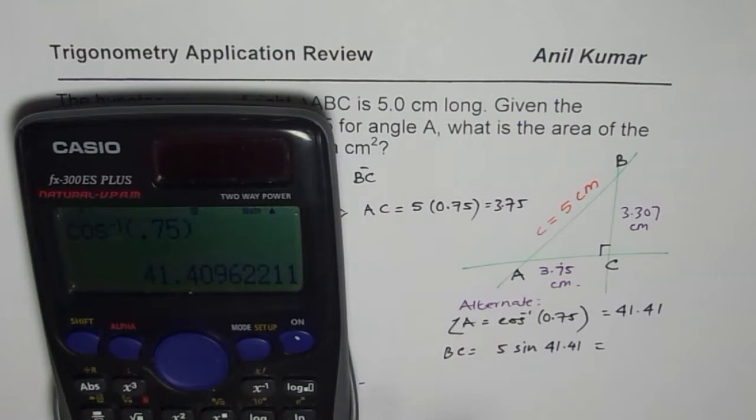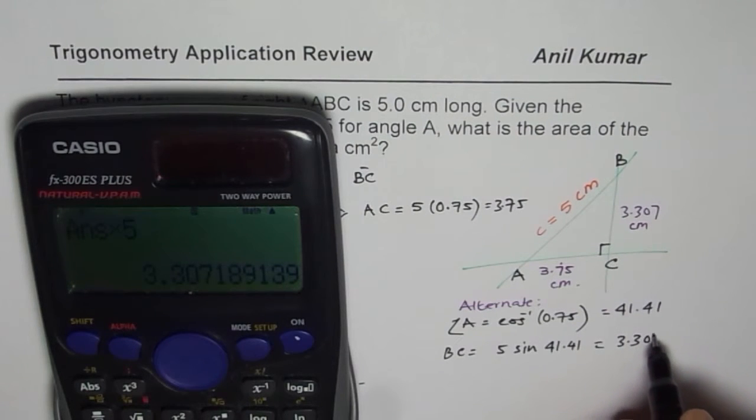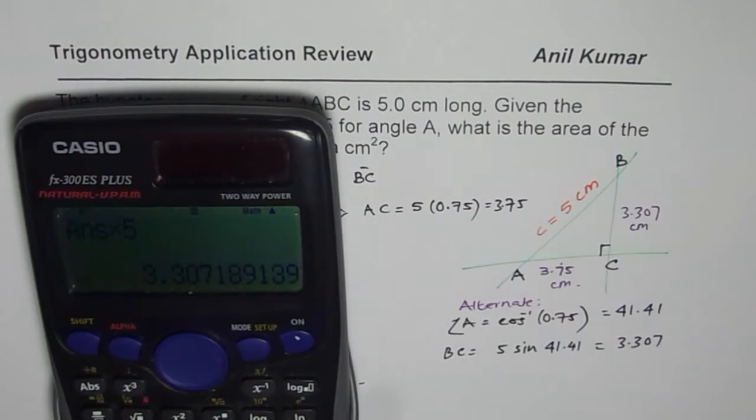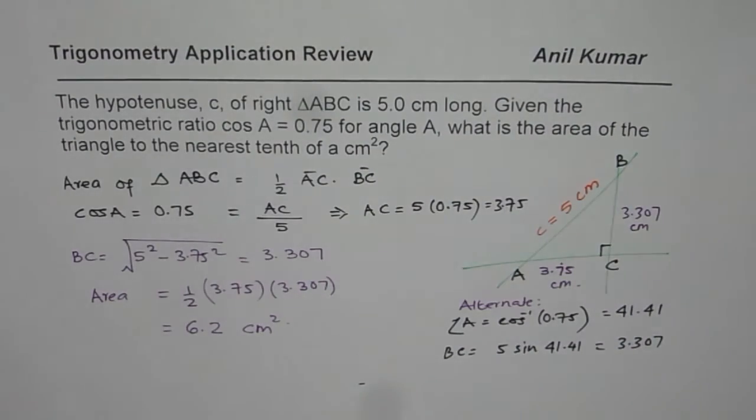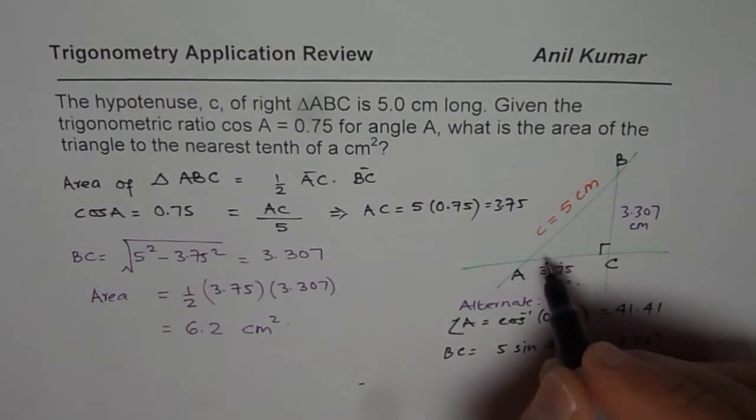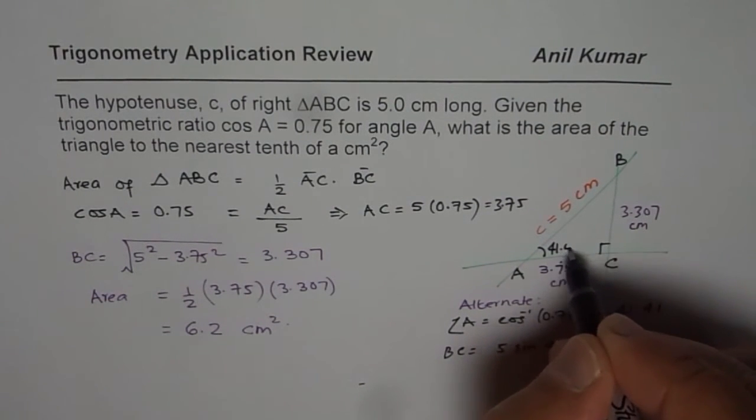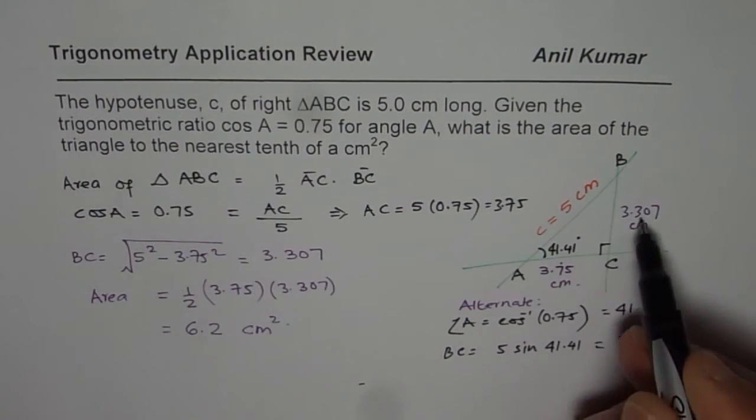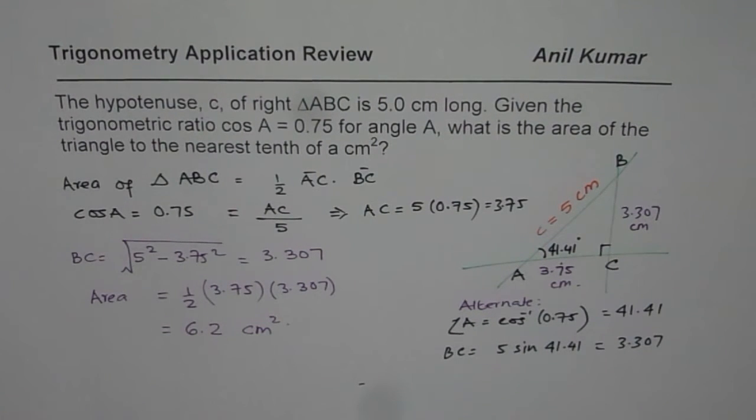BC equals 5 times sine of 41.41. Let us say sine of the answer and multiply that by 5. So if you do that you get 3.307, same thing. So that was an alternate way. Given cosine of an angle, you can find the angle first, then find the opposite side and get your answer.